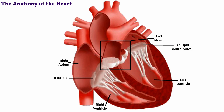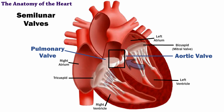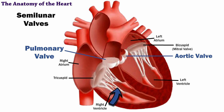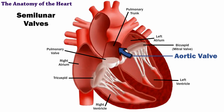There are also two semilunar valves: the pulmonary and the aortic. The pulmonary is between the right ventricle and the pulmonary trunk, and the aortic is between the left ventricle and the aorta.